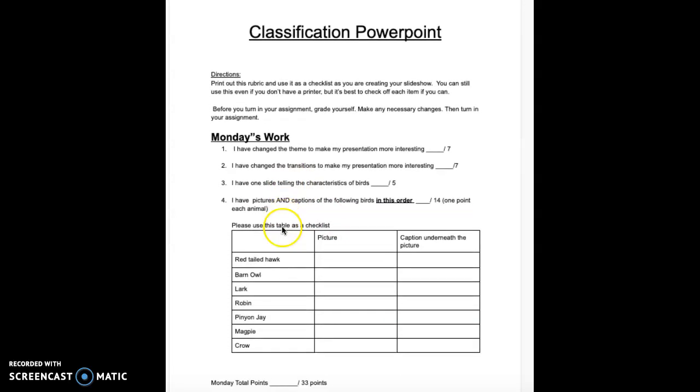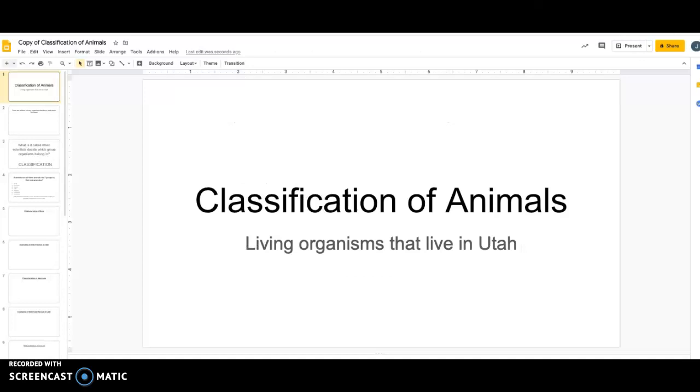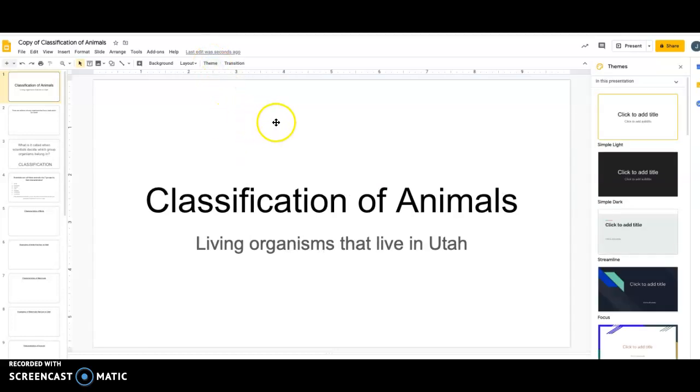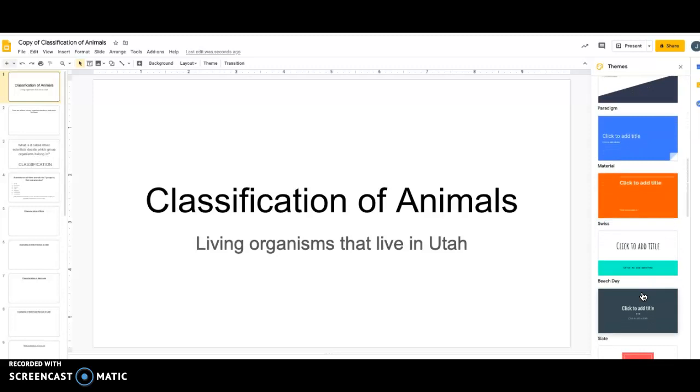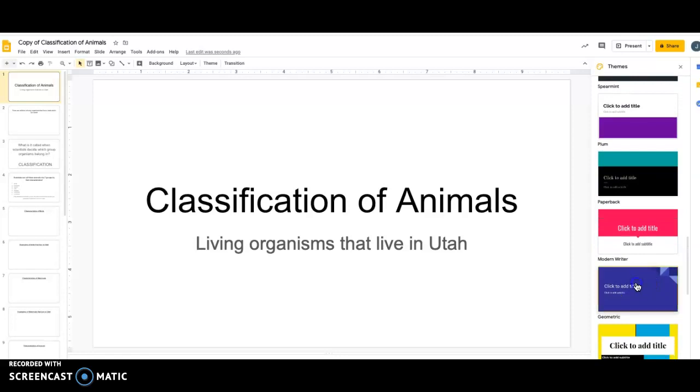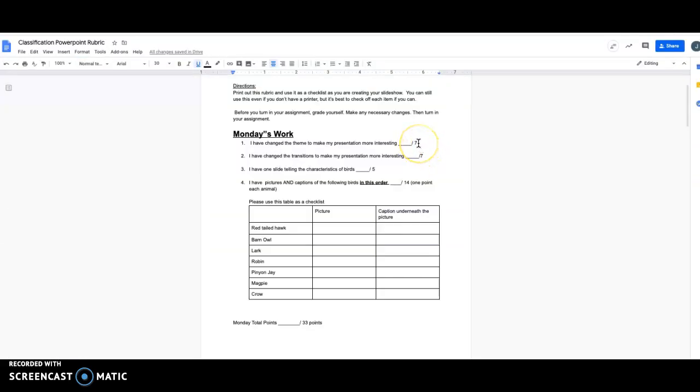I'm going to go over the first day with you and help you so you know exactly what to do. Let's take a look at Monday's work. Number one, I have changed the theme to make my presentation more interesting. Here is what your template looks like. It is black and white and extremely boring. You're going to change the theme by following the directions. The first thing you do is click on theme. You'll notice that to the right a bunch of themes come up. You can scroll through these and choose a theme to your liking. I'm going to choose this blue one. We're already done with number one. This is worth seven points, so don't forget to do it.